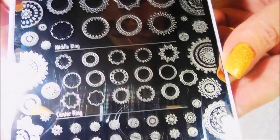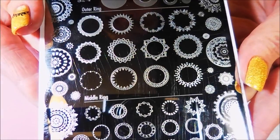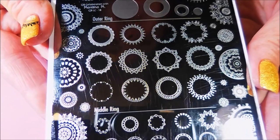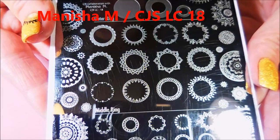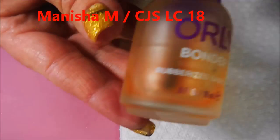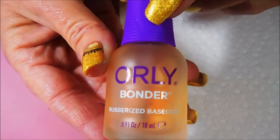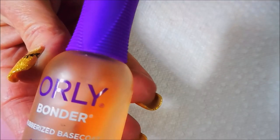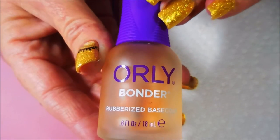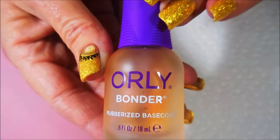I will be using the Clear Jelly Stamper collaboration with Manisha M plate, and it's GSLC018. Sorry about the glare, there's no way of avoiding that right now. Then I'm going to apply this Orly Bonder to all my nails just because I'm going to be taking my time to do these stamps. There's quite a bit of them, it's intricate, and I don't want to mess anything up.